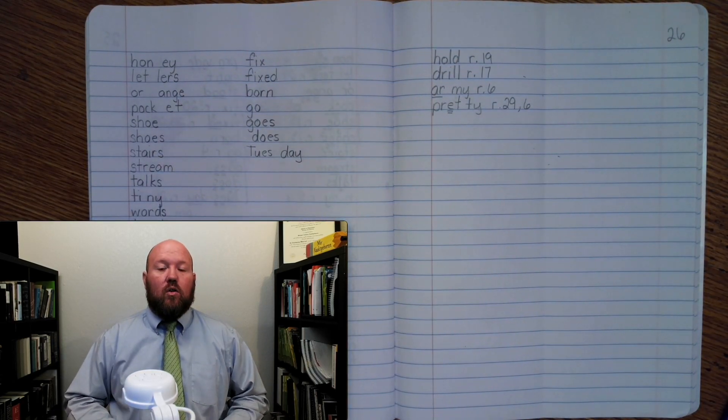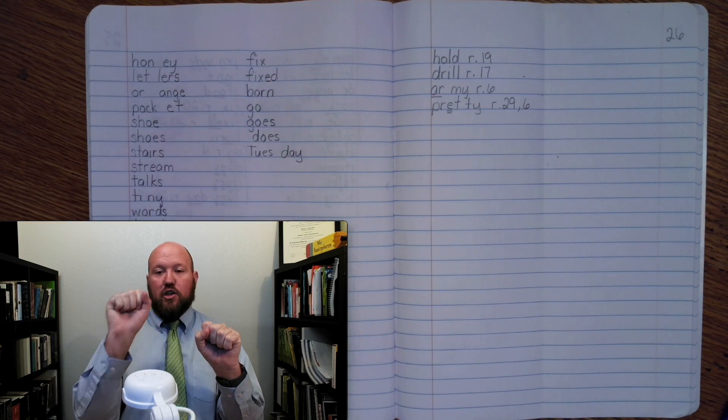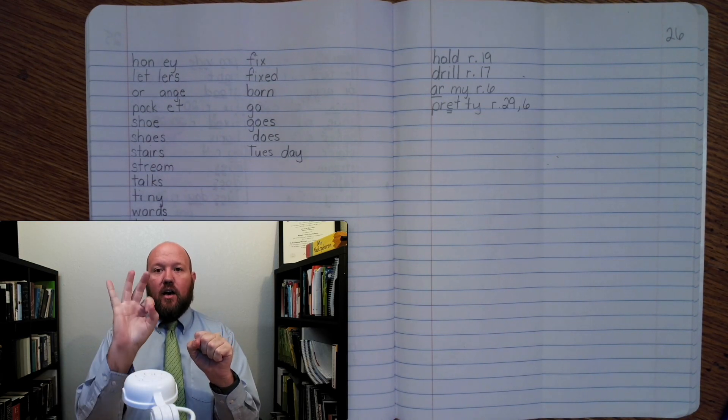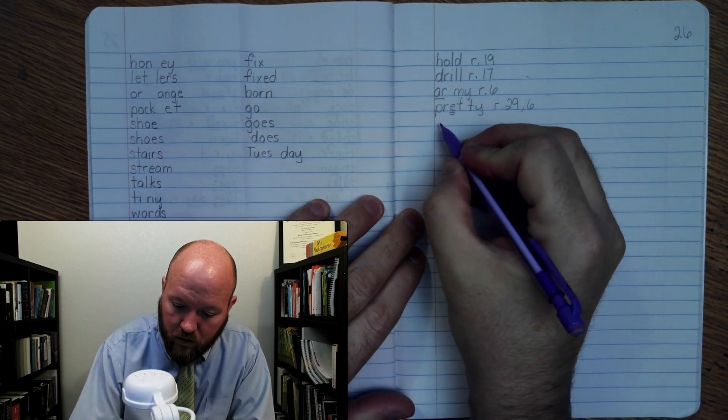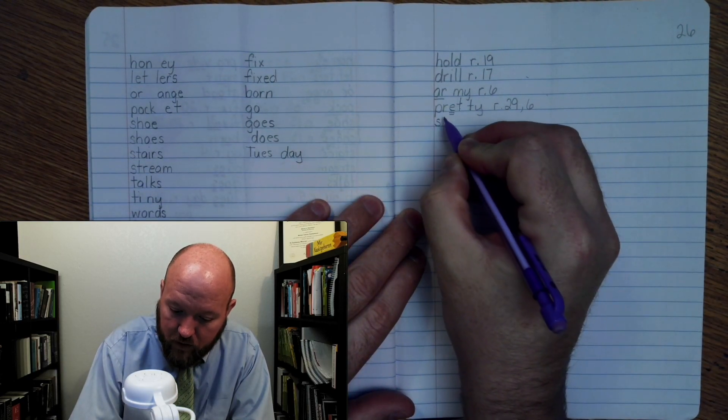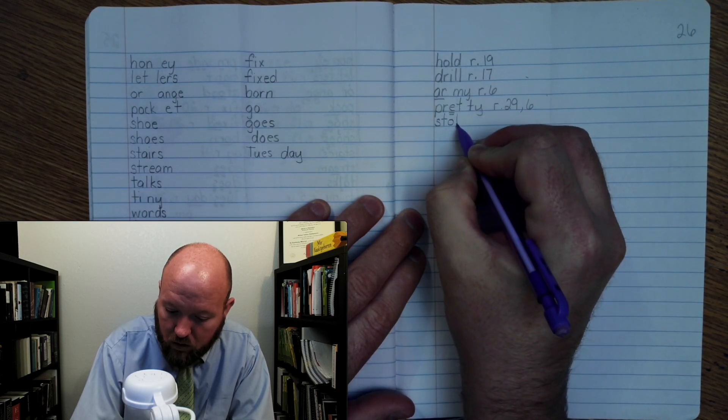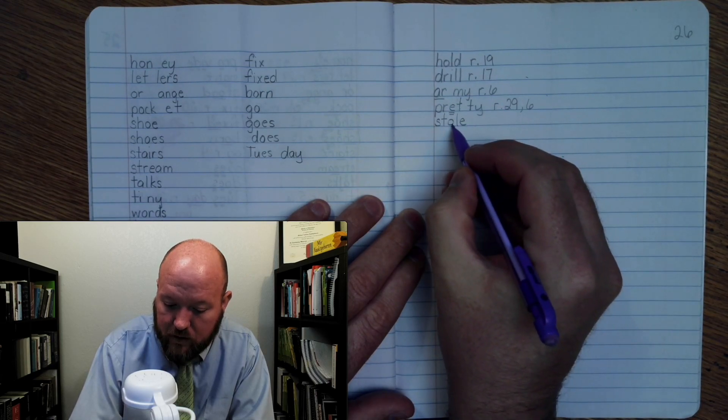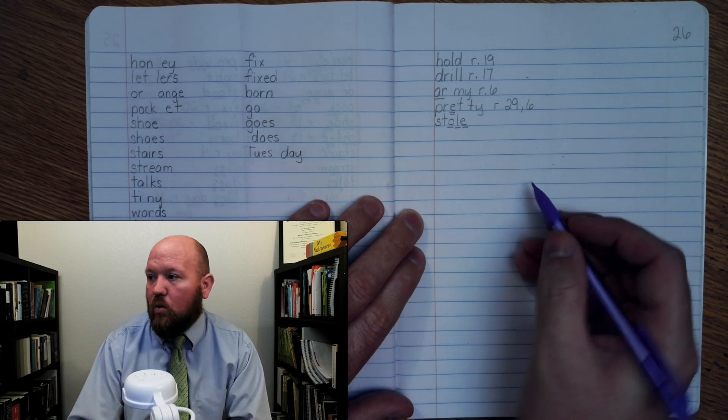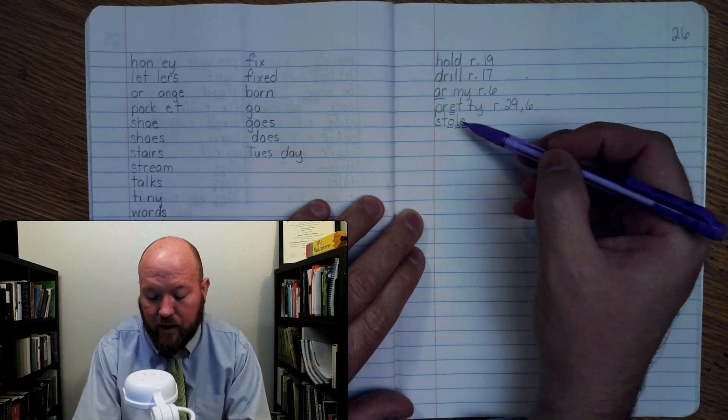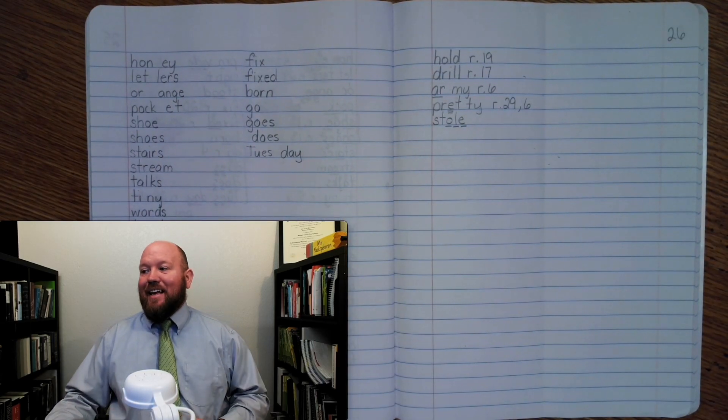The next word is stole, like 'who stole the tart?' Base word stole: S-T-O-L-E. Write it: S-T-O-L-E. For markings: S-T, O once, L once, E once. Stole. Here, the silent final E is allowing the O to say O.